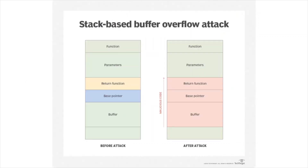When we call a function, we push things on the stack. The first thing we push is the parameters to the function. The second is the return address — where the function is supposed to return after execution is complete. The third is the base pointer, which is important to access the variables within a stack frame, and then come all the local variables of the function.